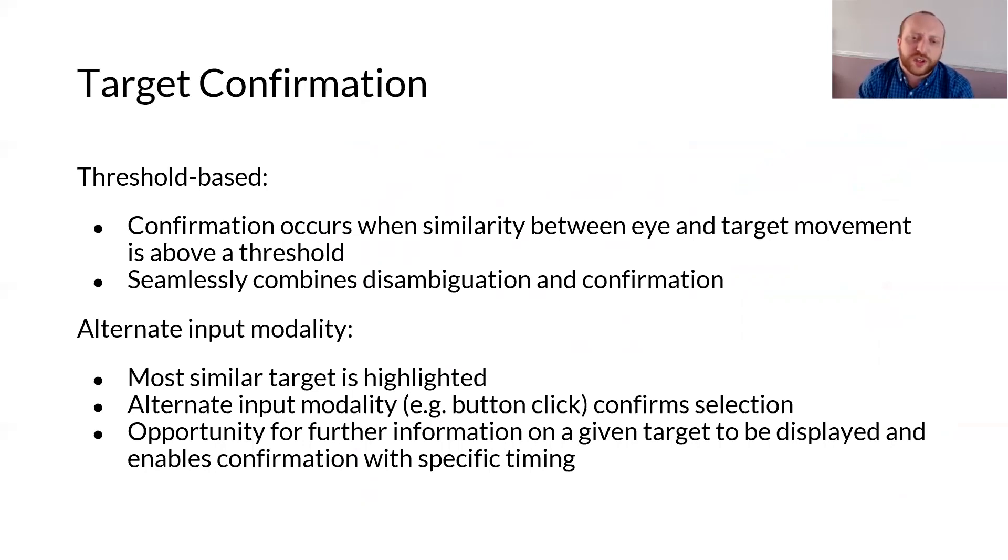In this work, we also consider separating disambiguation and confirmation stages. For this, we need only be concerned with the target that gives the best match to the eye movements at any given moment, therefore removing the requirement for a threshold. This may be used for selection based upon specific timing or when a user wishes to highlight or learn more about an object prior to making a selection. It also helps to further reduce the risk of accidentally selecting a target as the user needs to explicitly confirm the selection.